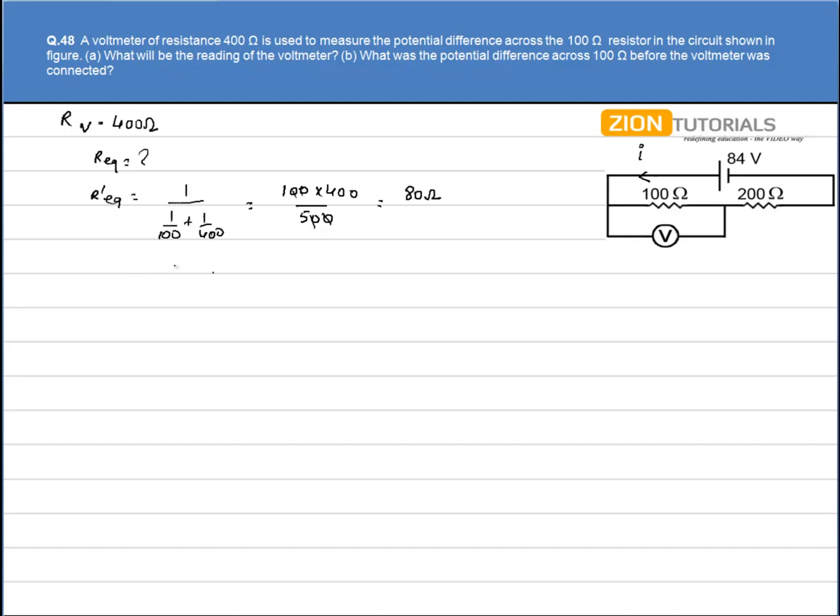80 ohms is in series with this 200 ohm. So our R equivalent comes out to be 80 ohm plus 200, that comes out to be 280 ohms. This is our net resistance.